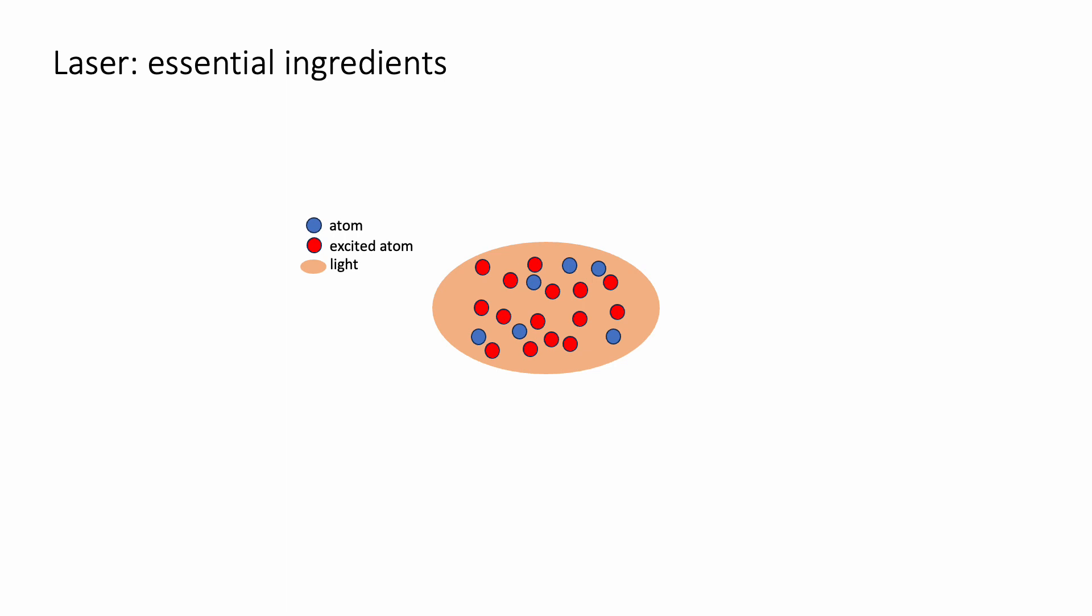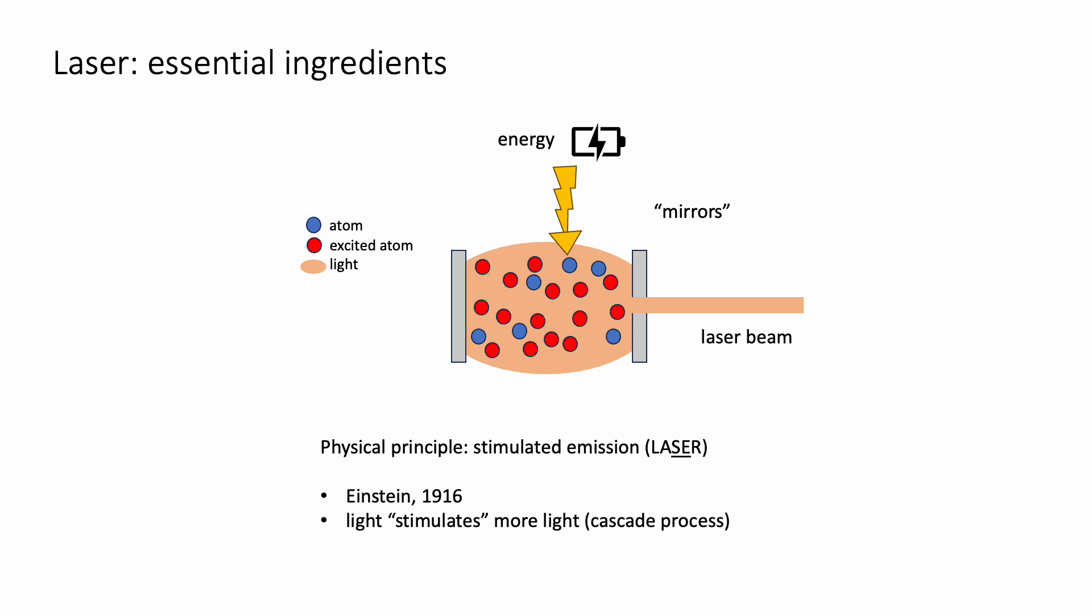A laser can be essentially understood as the light generated by an ensemble of atoms interacting with each other. In fact, an important property of atoms is that, if they are given some energy, for example from a battery, they can store it momentarily, we call them excited atoms. This energy can then be released by the atoms in the form of light. Inside a laser you also have some mirrors that essentially select the direction of the laser beam, that is let out by a hole into one of them.